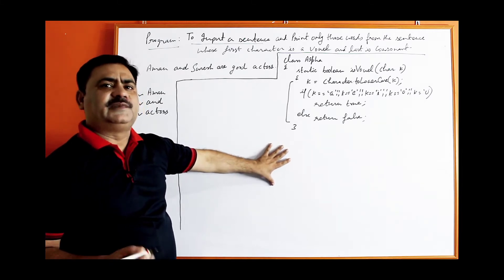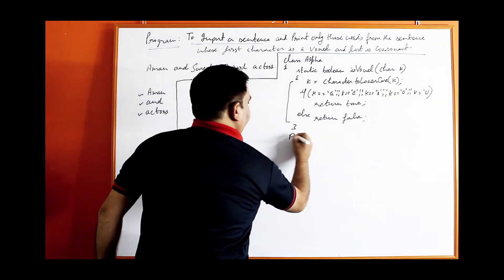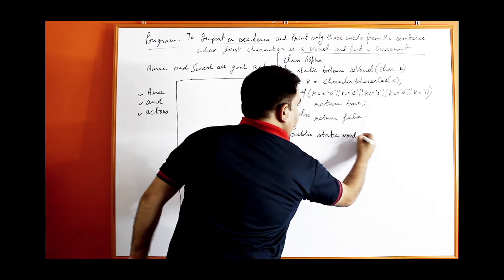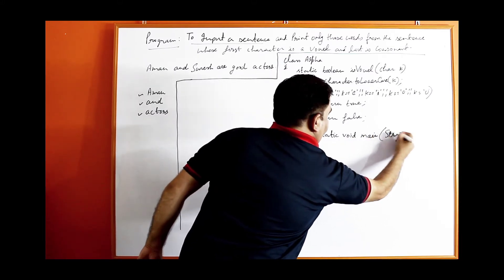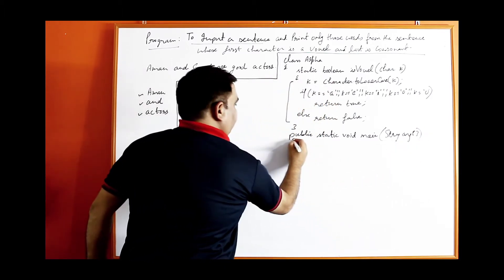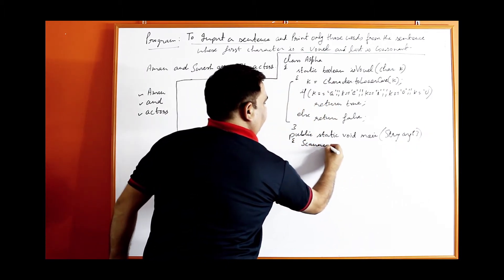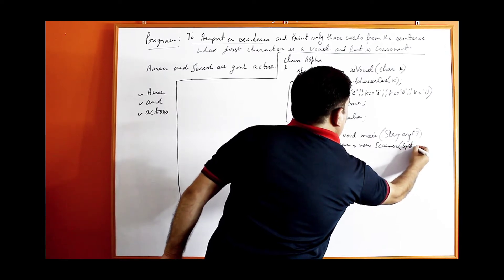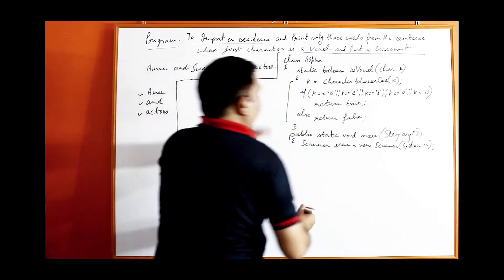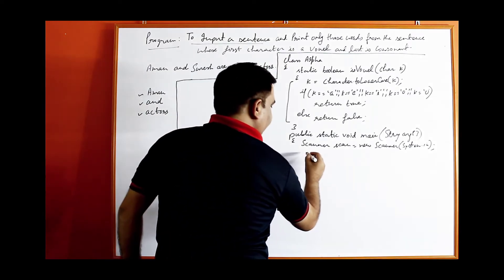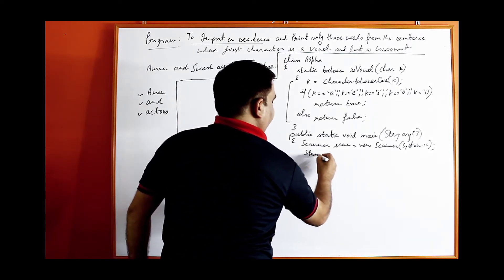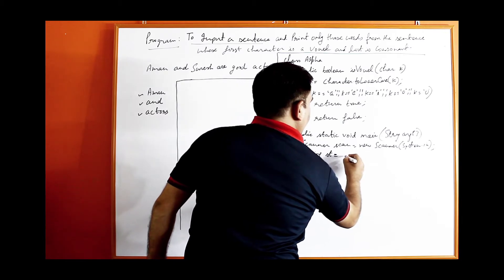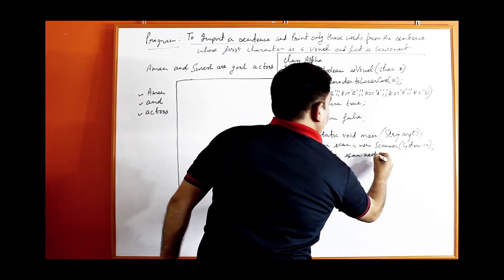In the main function — public static void main String arguments — you can input the string using Scanner class. Scanner scan equals new Scanner. If you are using Scanner class, you have to import the package util. Now enter the sentence: take one variable, String st equals scan dot nextLine.